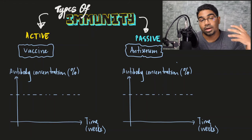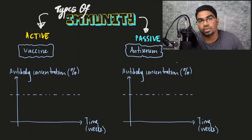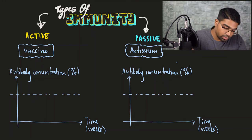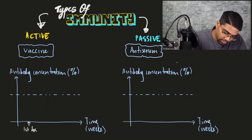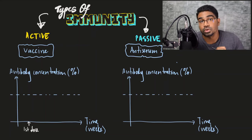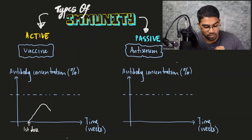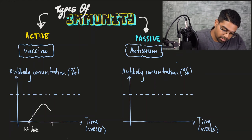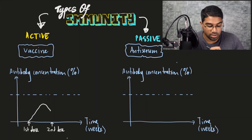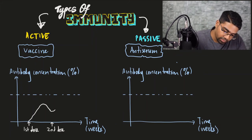Let's compare the level of antibodies in our blood after the administration of vaccine versus antiserum. For the first dose of vaccine, the body takes time to produce antibodies, so the level rises slowly. It will also start to fall, and at that point we need to introduce the second dose — known as the booster dose. Once the booster is administered, the level of antibodies rises above the effective concentration line.